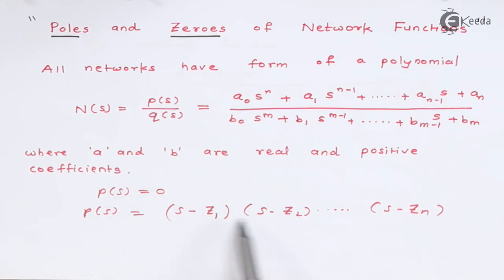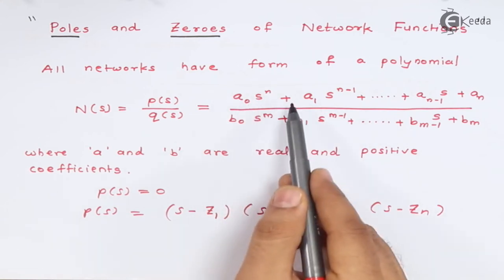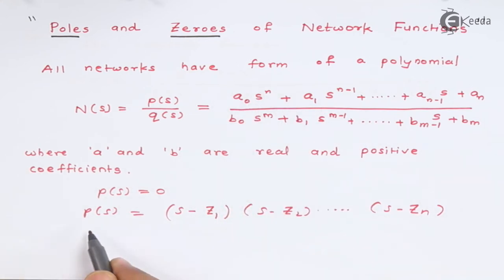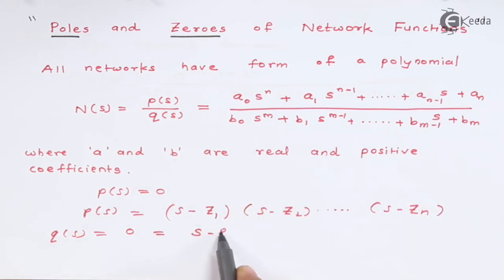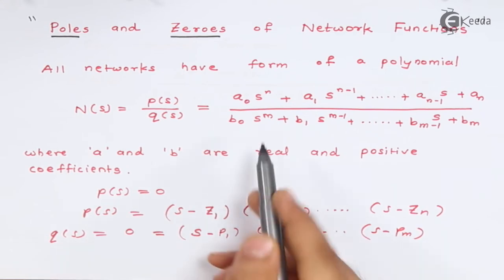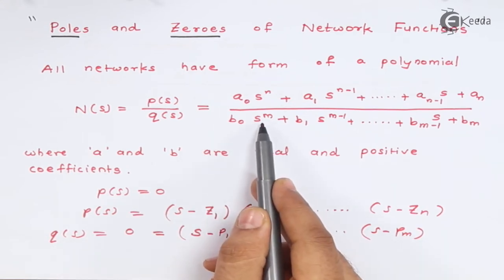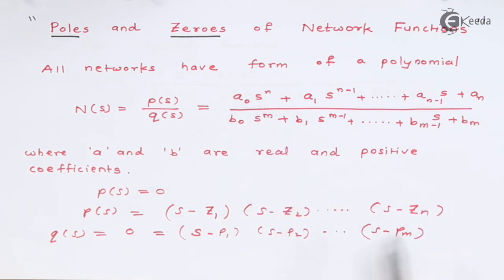So there are particular values of this s for which this numerator can be 0. So also suppose we equate this Q(s) equal to 0, and then we write this as (s - p₁), p for pole, (s - p₂) up to... because this polynomial will have m roots because it has order m. The numerator polynomial will have n roots.